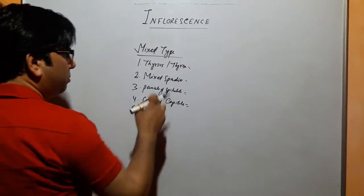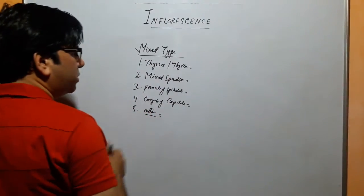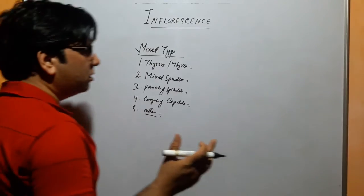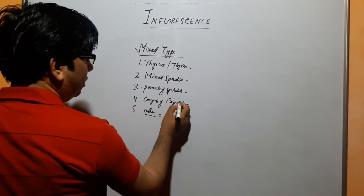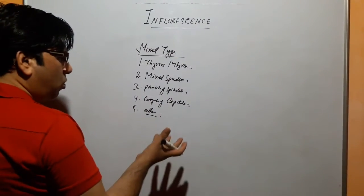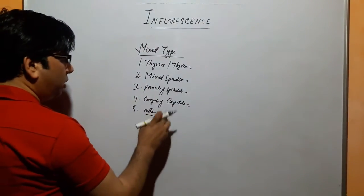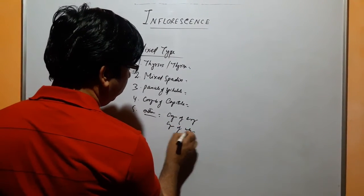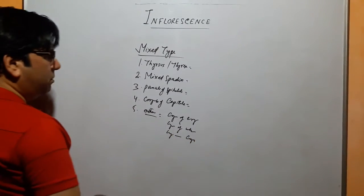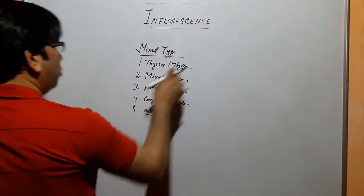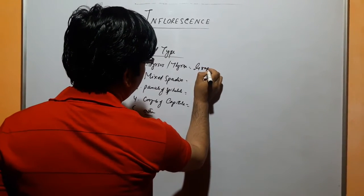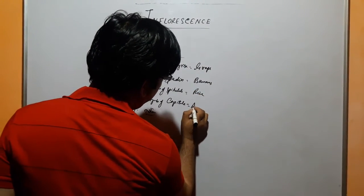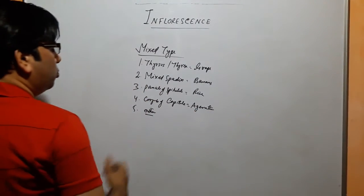Mixed spadix — you will get the spadix, and again there is a cymose type of inflorescence. Panicle of spikelet: compound and spikelet simple racemose — these two are mixed. Corymb of capitula is made, but the flower is in the form of capitula. There are other types like cyme of corymbus, cyme of umbel, cyme of capitula. Examples: thyrsus — grape; mixed spadix — banana; panicle of spikelet — rice; corymb of capitula — Ageratum. So this is mixed type.